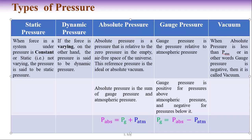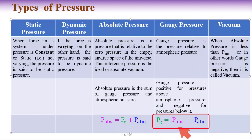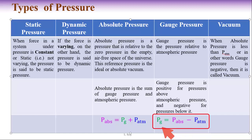What is vacuum? When absolute pressure is less than atmospheric pressure — in other words, when gas pressure is negative — then it is called vacuum. If absolute pressure minus atmospheric pressure gives a negative term, that gas pressure is normally called vacuum.